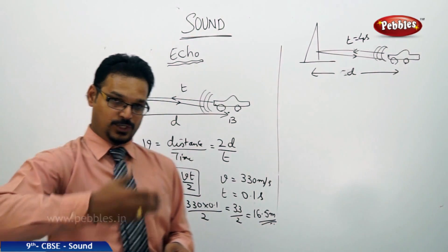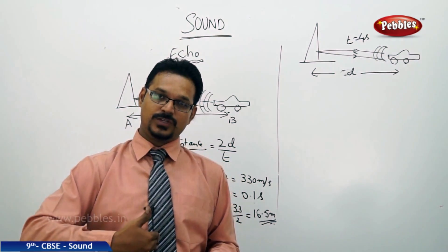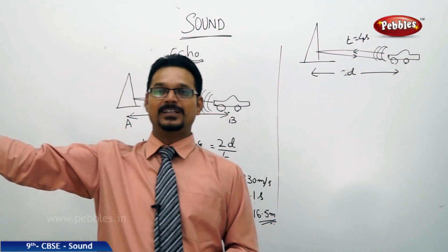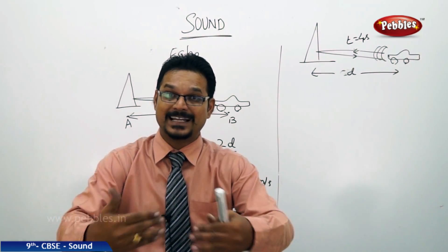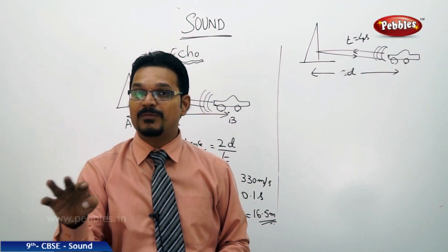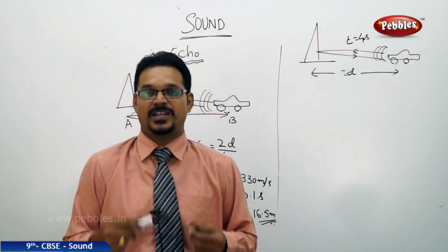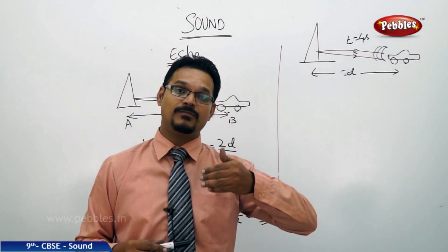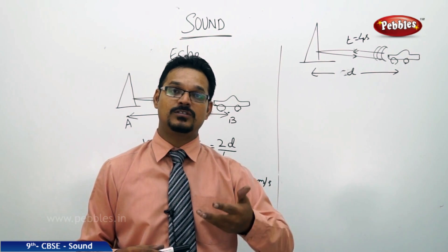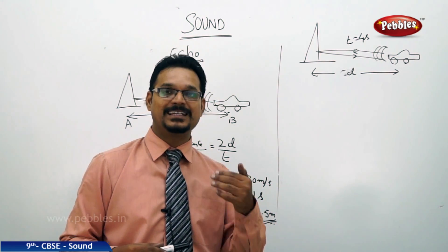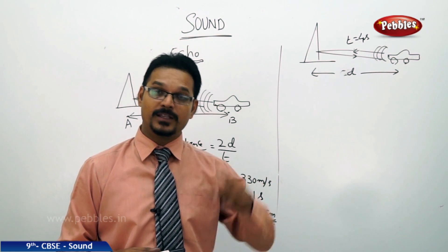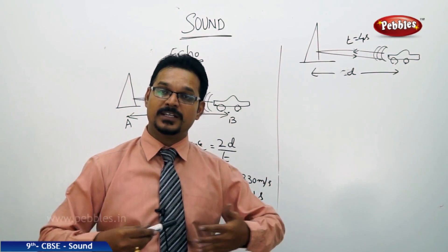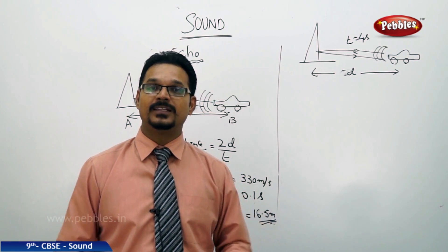The minimum distance between the source and the reflector should be 16.5 or more than 16.5 meters. If it is less than 16.5, you can't produce echo. That's why here I'm standing and talking to you but unable to produce echo, because between me and the wall the distance is less than 16.5.